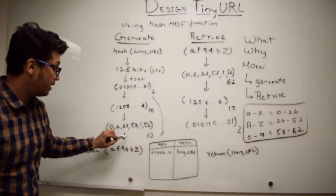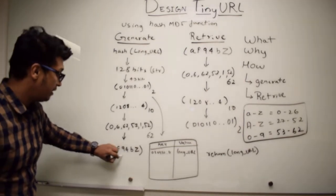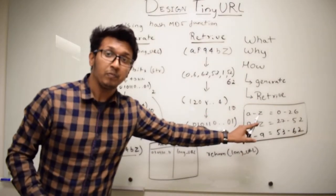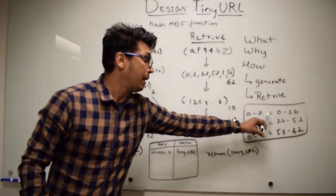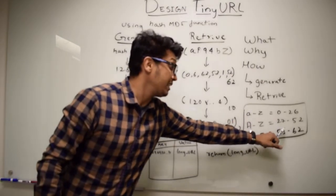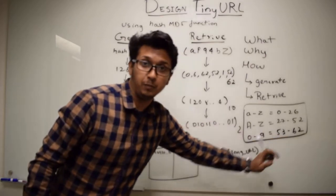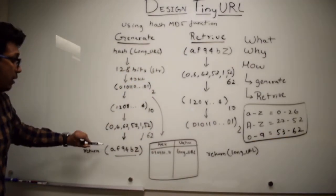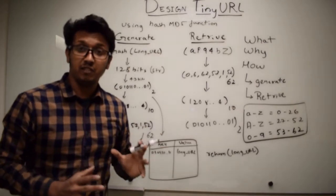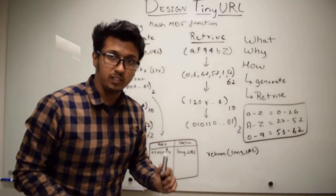The base 62 value can then be converted to an alphanumeric value of seven digits using a mapping table. This table maps a to z to positions 0 to 26, capital A to capital Z to positions 27 to 52, and digits 0 to 9 to positions 53 to 62. Once we get this seven-character alphanumeric string, we return it to the user. This is how the generate function works.